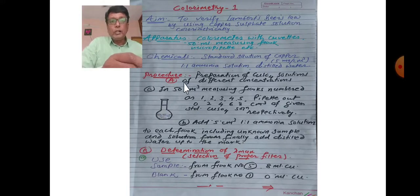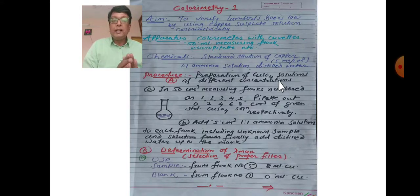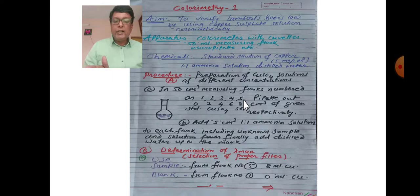Procedure Part 1: Preparation of copper sulfate solution of different concentrations. Lambert-Beer's law relates solution concentration to absorbance. Take five 50 ml measuring flasks numbered one through five, plus one for the unknown solution.